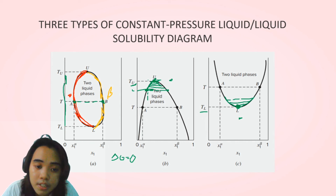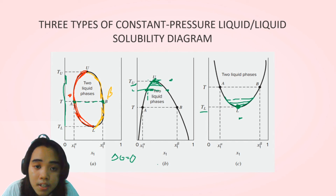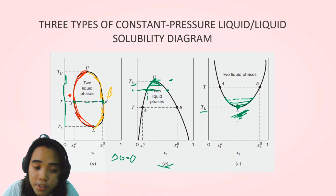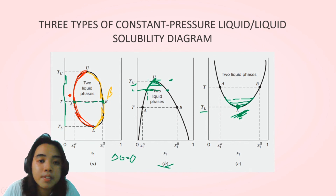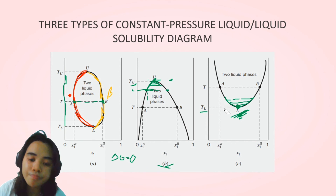Figure A, where both an upper and lower critical solution temperature exist, is rarely observed. In Figure B, when the binodal curve intersects the freezing curve, only the upper critical solution temperature exists. In Figure C, when they intersect the vapor-liquid equilibrium bubble point curve, only the lower critical solution temperature exists. That's what liquid-liquid equilibrium is all about.